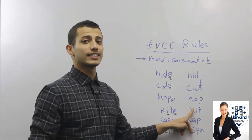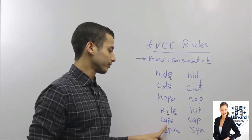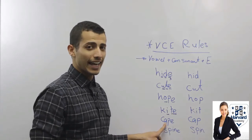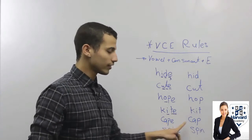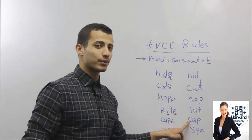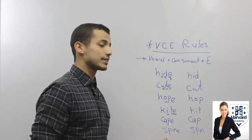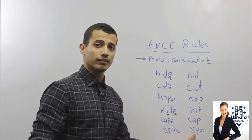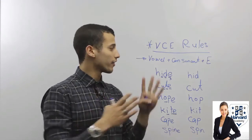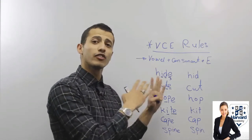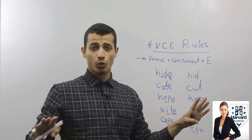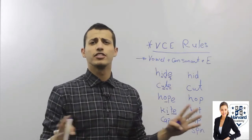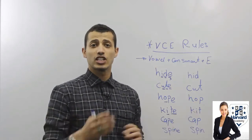Different example here — this is 'kite.' Why? Again, VCE: I. 'Kite,' remove the E, it's going to be 'kit.' Keep, cap — 'cape,' 'cap.' 'Spine,' 'spin.'